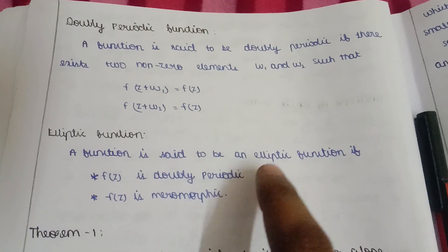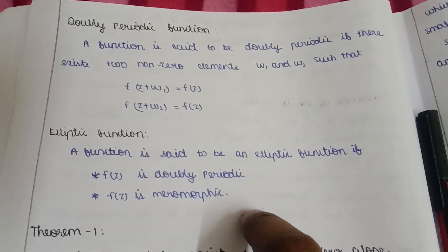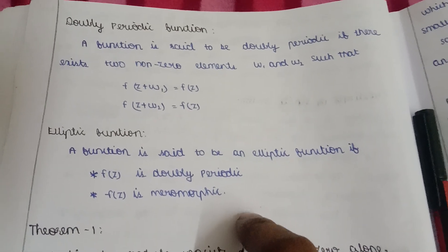If the function satisfies both doubly periodic and meromorphic, then the function is said to be elliptic function. Hope you all understand and thank you.